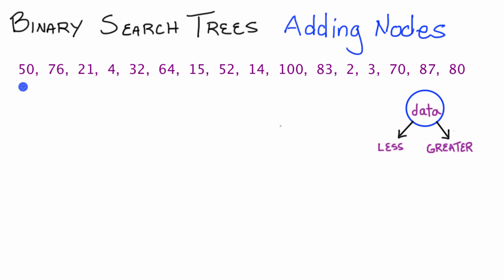We're going to draw the tree that I'll be coding up later on, so you can refer to this video for a visual representation. The properties of a binary search tree are: whatever data value is in each node, all nodes in the subtree connected to this node's left pointer are less than that data value, and all nodes connected to the right pointer are greater than the value stored in this node. With that, let's go ahead and create a binary search tree with these numbers.